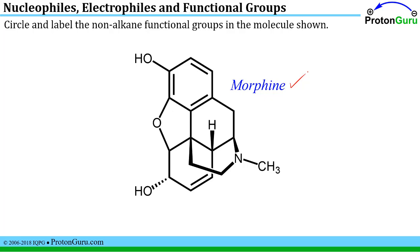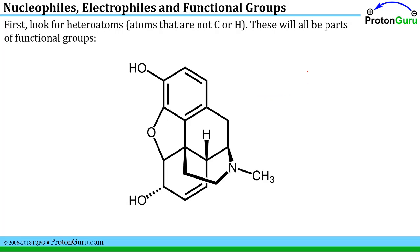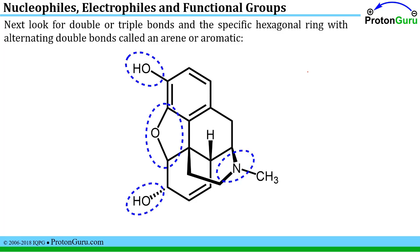The easiest way to identify functional groups is first to look for any heteroatom — any atoms that are not carbon or hydrogen. These will, of course, be parts of functional groups, and I've circled those in blue here.